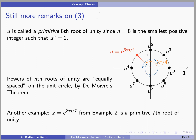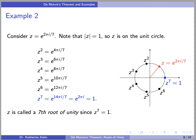As another example, from Example 2, e^(2πi/7) is a primitive 7th root of unity. Looking back at that slide, z^7 = 1, and no smaller positive integer power of z gives 1, so z is a primitive 7th root of unity since z^7 = 1 and z^n ≠ 1 for all positive integers n less than 7.